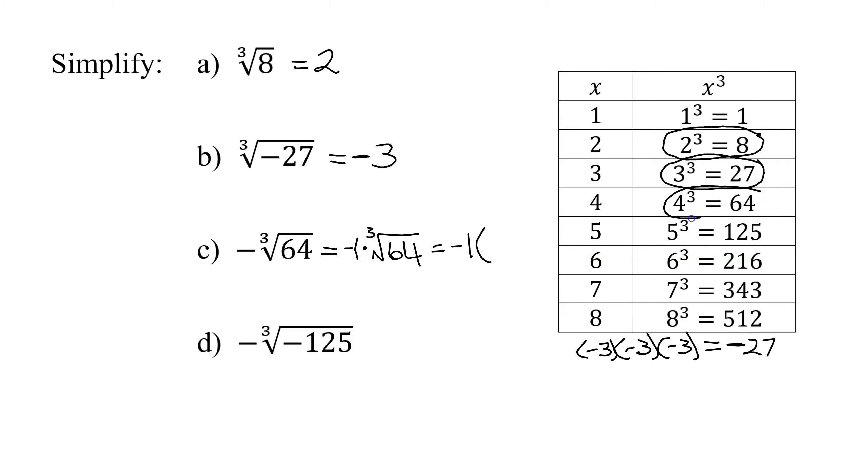So I'm going to have negative one times the cube root of 64. 64 is a perfect cube. It's four cubed. So the cube root of 64 is four. And then negative one times four is negative four.